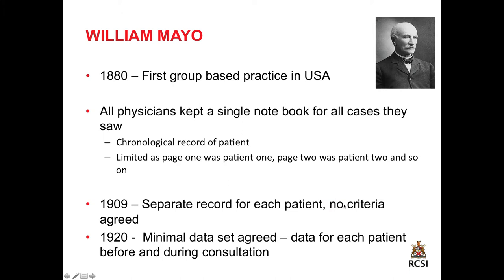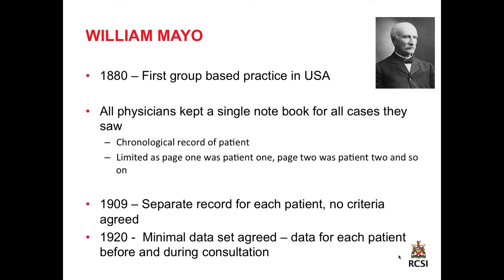A full 29 years later, the Mayo Clinic separated the records into individual groups of notes for one patient. But even then, there were no agreed criteria of what to record — these were just the physicians' observations written in one place. It took another 11 years, until 1920, where a minimal data set was agreed: data taken for each person before, during, and after the consultation. That's 40 years — almost inconceivable in our electronic age. And as we'll see, electronic records are proving quite difficult to implement.